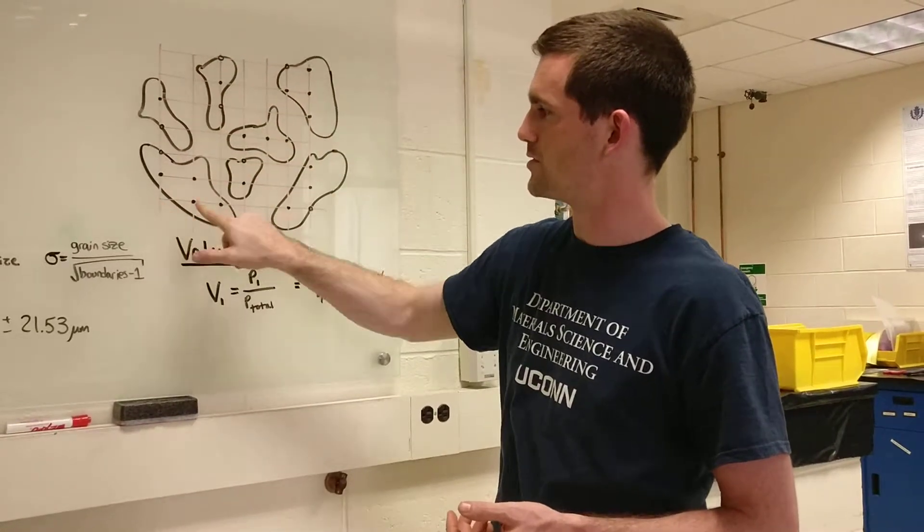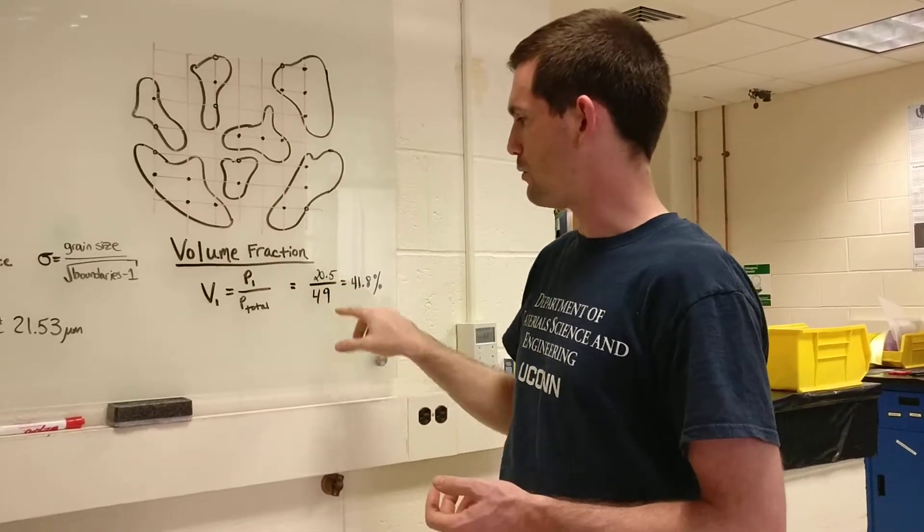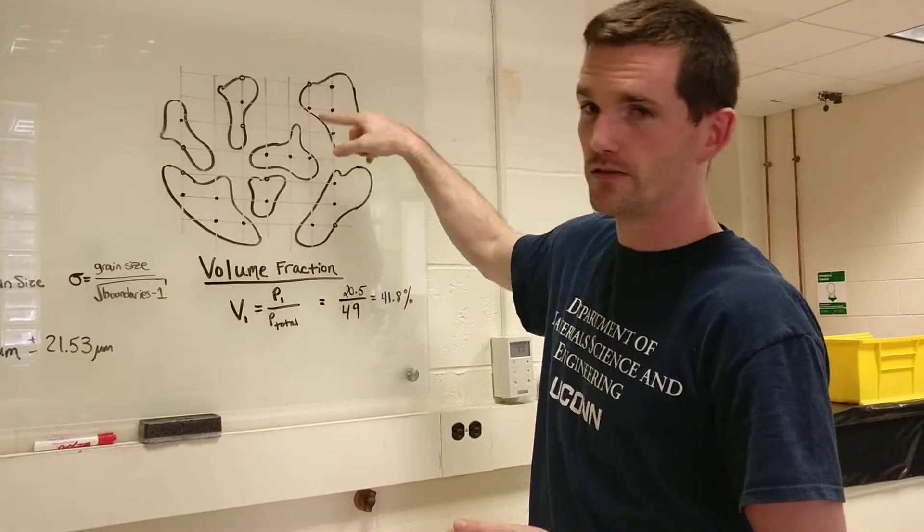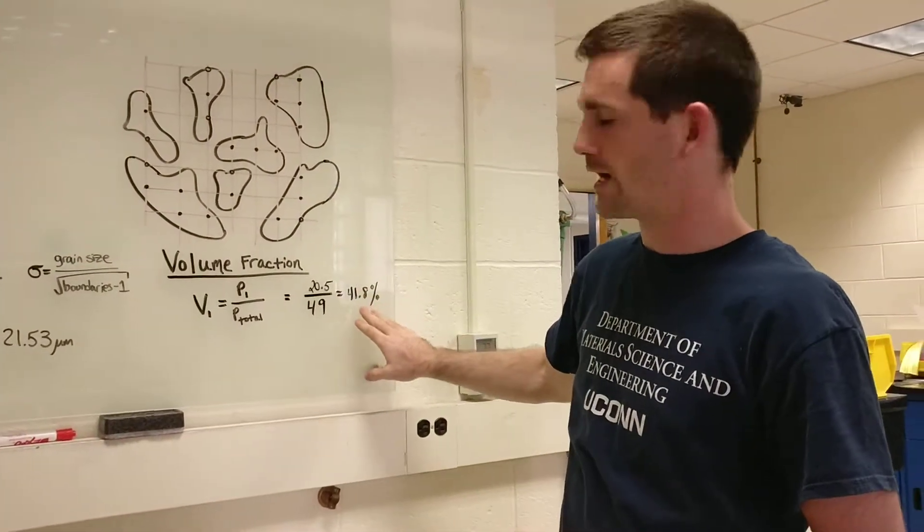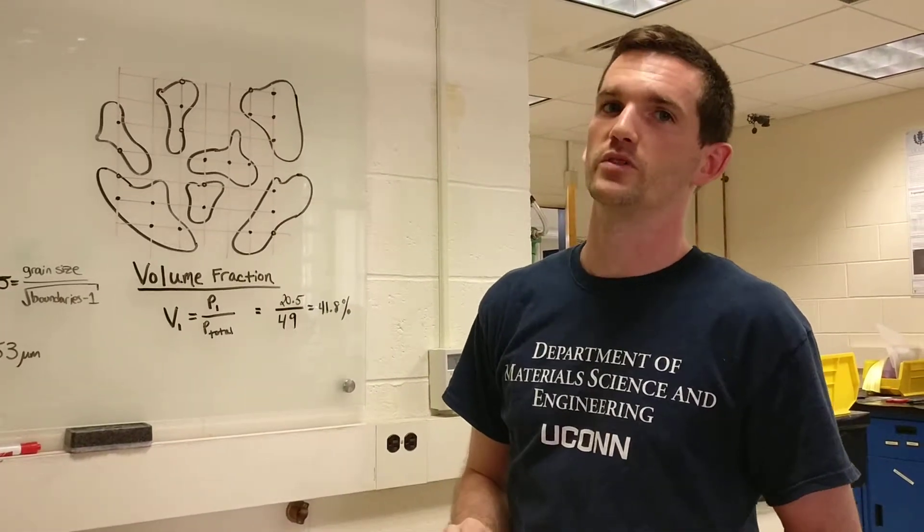So we have 49 points total and we've counted a number of 20.5 that are inside these grains. That equals a volume fraction of 41.8%. That's how you would do it for all binary phase materials.